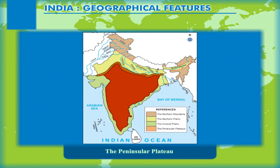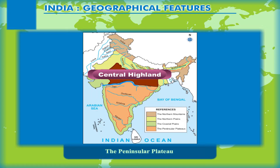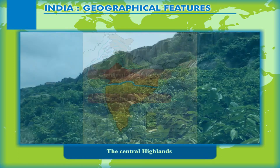The igneous mass of rocks is made up of several large and small plateaus which have broad and rounded summits. The Narmada River, which flows westwards along a fault, divides the plateau into two parts. The northern smaller division is known as the Central Highlands, and the larger division to the south is called the Deccan Plateau.